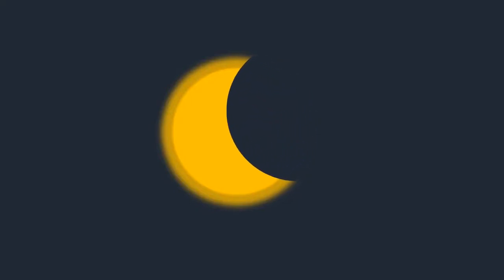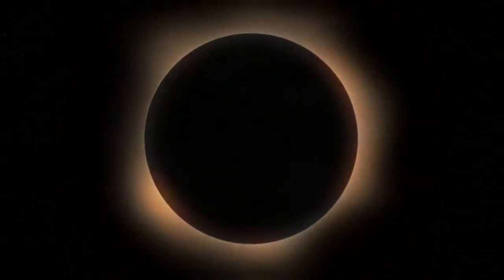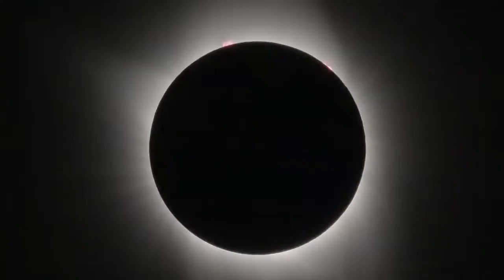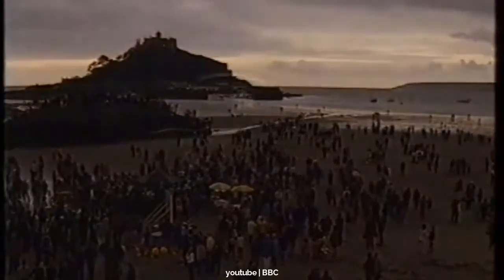A solar eclipse occurs when the Moon comes between the Sun and Earth and blocks out the sun rays. A total solar eclipse occurs when the Moon completely covers the sun rays, as seen in the 1999 solar eclipse and in 2017, there was a total solar eclipse visible in a belt spanning all across the United States.